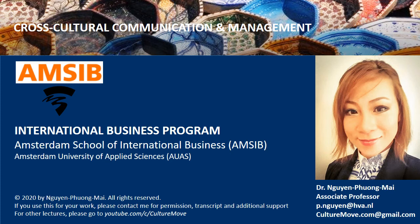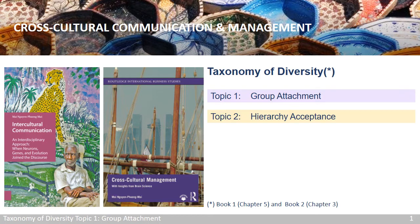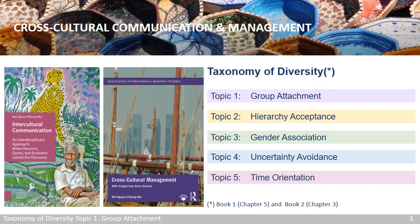Welcome back to cross-cultural communication and management. This is topic one of the lecture on the taxonomy of diversity, or cultural values. There are five topics in this lecture. We will cover the five most cited fundamental concerns that all human societies need to form a culture: group attachment, hierarchy acceptance, gender association, uncertainty avoidance, and time orientation. The degrees of importance each society and individual places on these concerns create many different values, leading to the immense diversity we see in cultures around us.